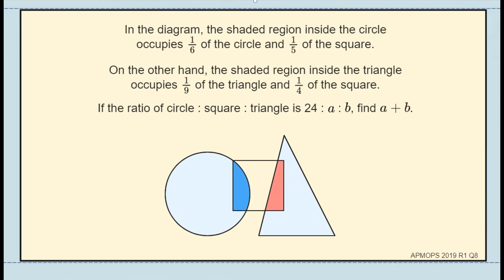Here's the problem statement. In the diagram, the shaded region inside the circle occupies one-sixth of the circle and one-fifth of the square. On the other hand, the shaded region inside the triangle occupies one-ninth of the triangle and one-quarter of the square. If the ratio of circle to square to triangle is 24 to A to B, find A plus B.